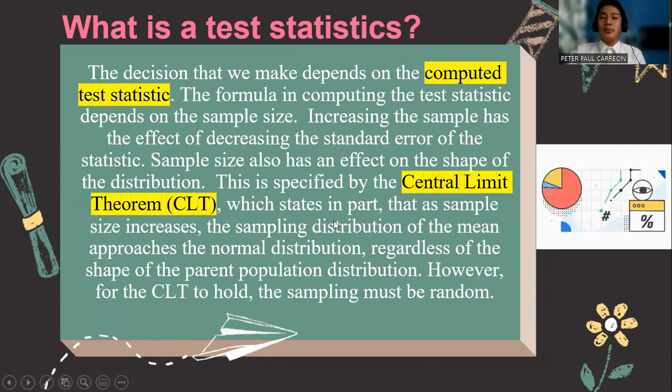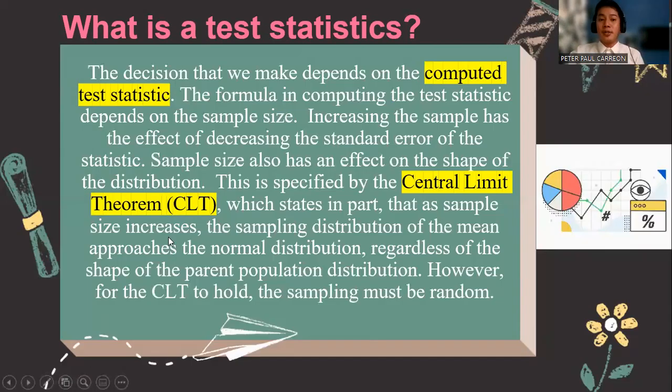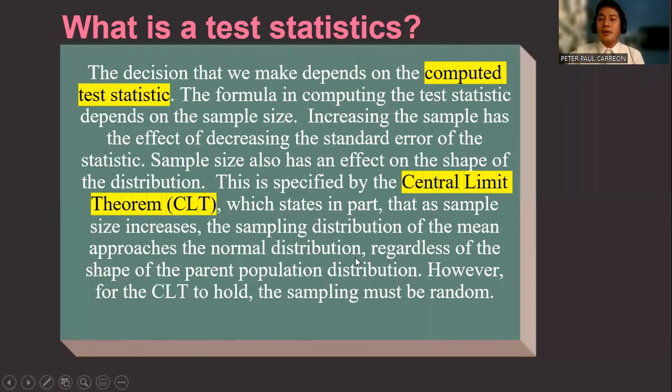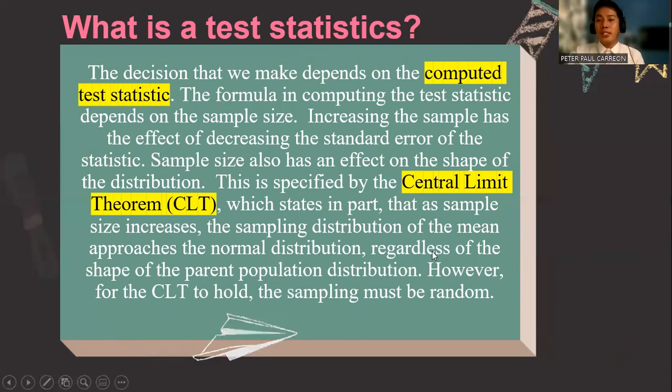The formula in computing the test statistic depends on the sample size. The sample size has an effect on the shape of the distribution. By increasing the number of samples, it shows the Central Limit Theorem, which states that if we increase the number of samples, then the sampling distribution of the means approaches the normal distribution, regardless of the shape of the parent population distribution.